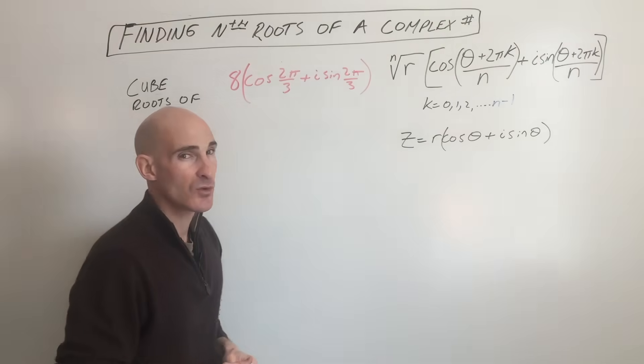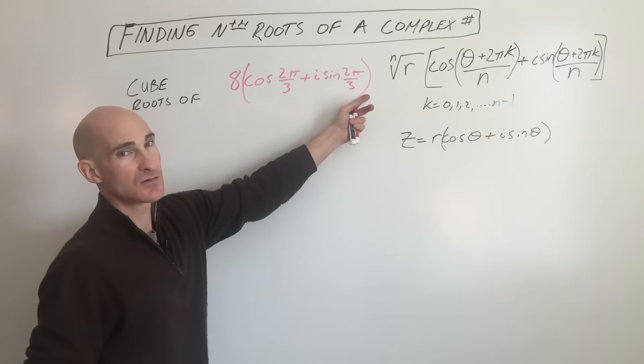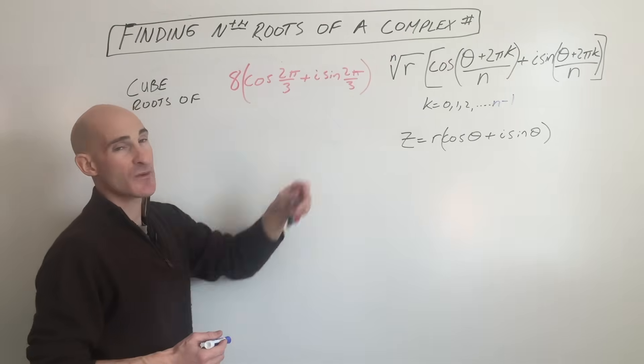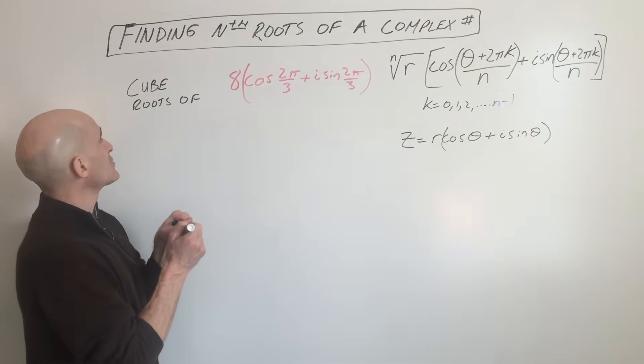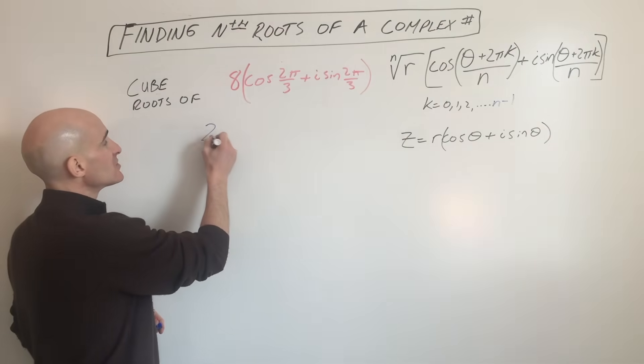So let's take a look at an example and we'll walk through it. So say we want to find the cube roots of this complex number, which is in trigonometric form. What we're going to do, since we're taking the cube root, we're going to take the cube root of 8, which is 2.